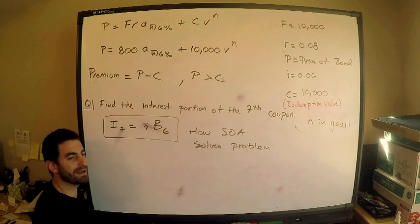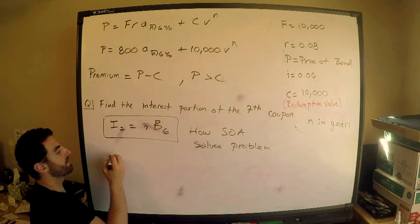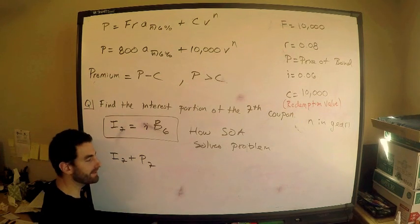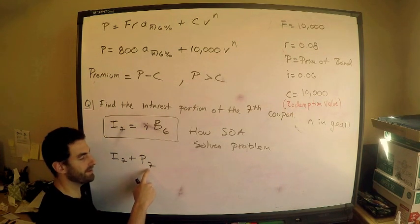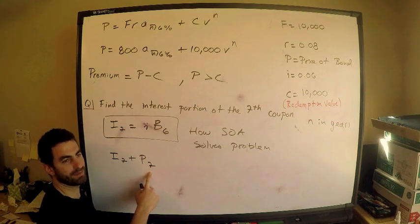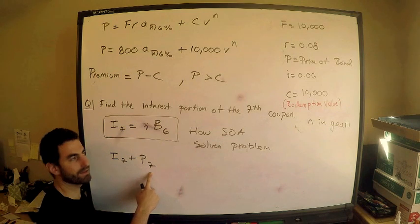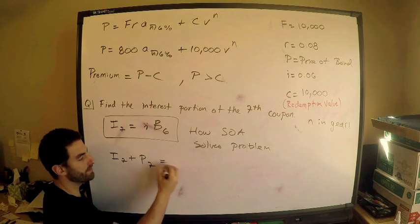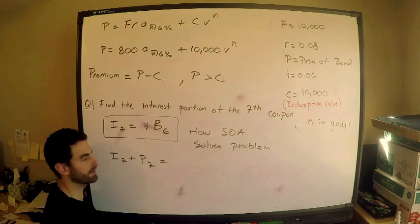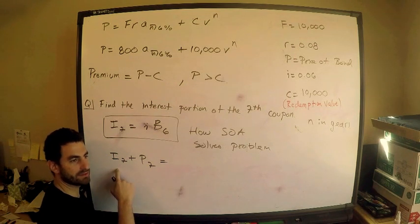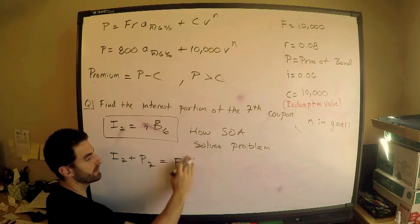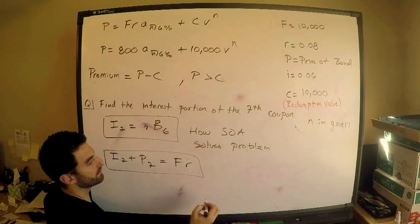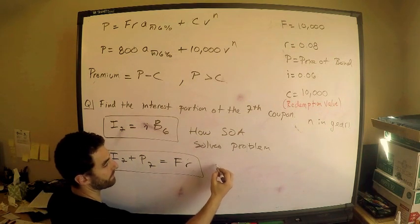So the interest portion in the seventh payment I_7, plus the amount of premium amortized in the seventh coupon P_7, must add up to the coupon value fr. Because the coupon is composed of two things: interest and principal. So fr equals I_7 plus P_7. This is the relationship I'm going to use to solve the problem.